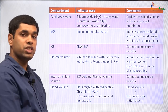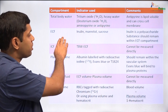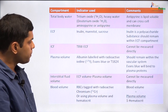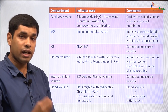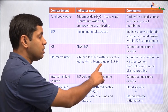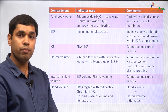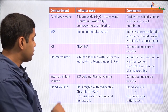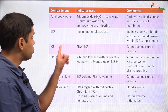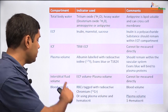To measure the intracellular fluid compartment, this cannot be done directly. What we can do is measure the total body water and subtract the ECF — total body water minus ECF gives us an indirect measure of the intracellular compartment. Similarly, if we want to measure the interstitial fluid volume, this also cannot be measured directly, but we could measure the total ECF volume and subtract the plasma volume — ECF volume minus plasma volume gives an indirect idea of the interstitial volume.